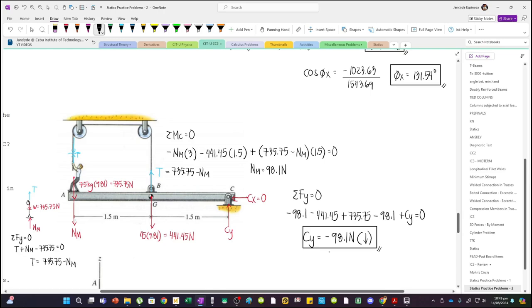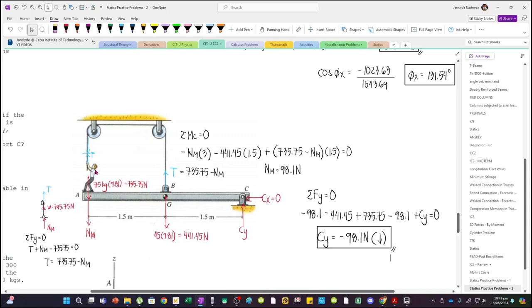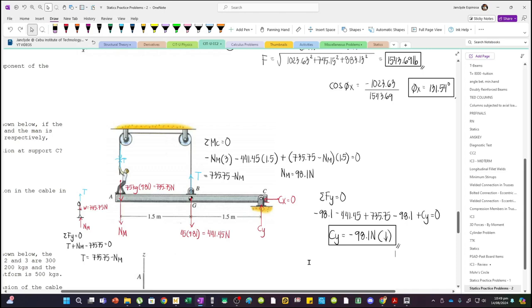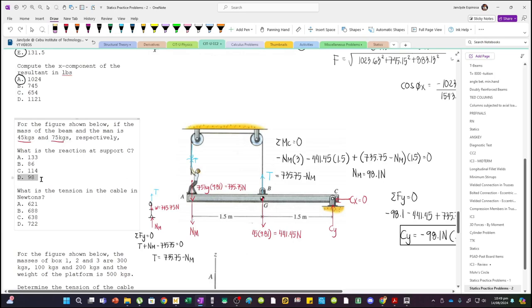Newtons acting downward. Why is it acting downward? The mass of the man is greater than the mass of the beam, so it means the beam will rotate. That's why the reaction here is downward. So negative 98.1, letter D.